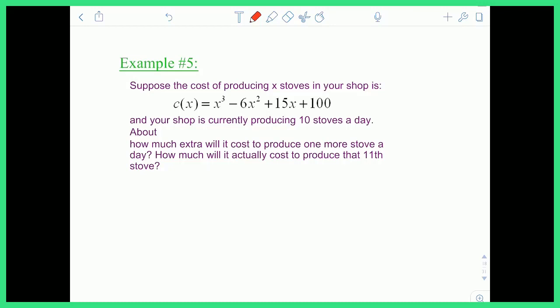So if we want to calculate an approximation, about how much, we want to plug the derivative, or we need the derivative function, and we're going to plug in 10. So let's go ahead and calculate the derivative. The derivative is 3x squared minus 12x plus 15. And if I want to calculate the rate of change for producing one more stove, I plug 10 into the derivative. And if I plug 10 into the derivative,